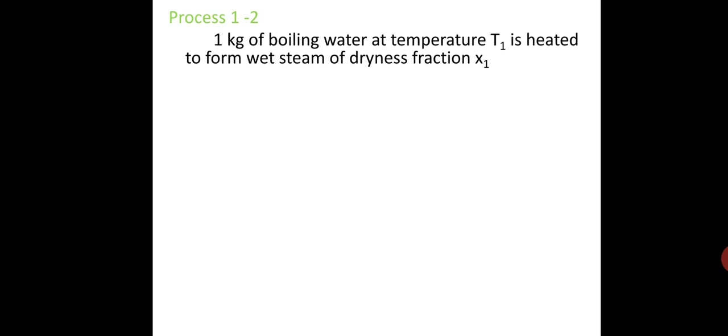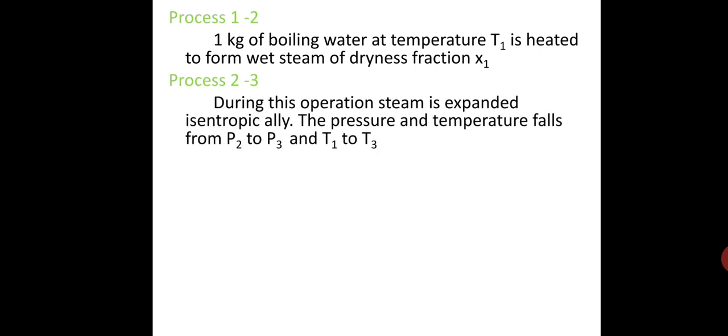Process 2 to 3: During this operation, steam expands isentropically. The pressure and temperature falls from P₂ to P₃ and T₂ to T₃. Since no heat is supplied or rejected during this process, there is no change of entropy. The process is represented by the curve 2 to 3.